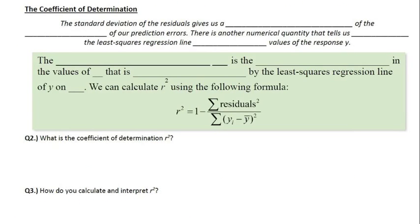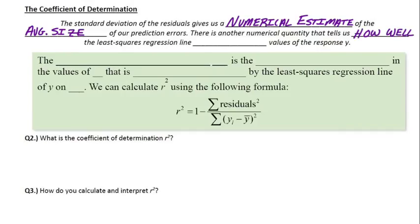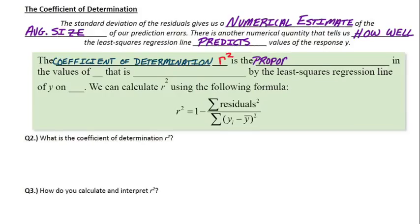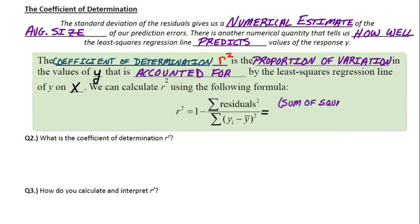What we just looked at is actually the coefficient of determination. There's a numerical quantity that tells us how well the least squares regression line predicts values of the response variable Y. That is our coefficient of determination, and that variable is R-squared. Yes, it's related to the other R, the correlation coefficient. R-squared is actually the proportion of variation in the values of Y accounted for by the LSRL on X, and we can calculate R-squared — it's exactly what we just did.